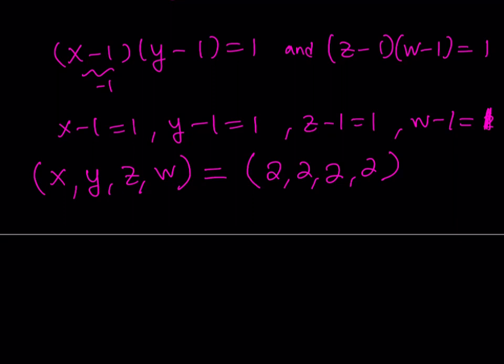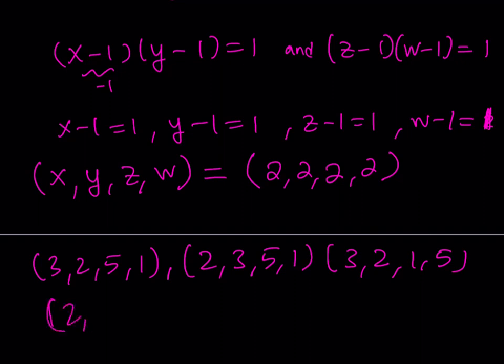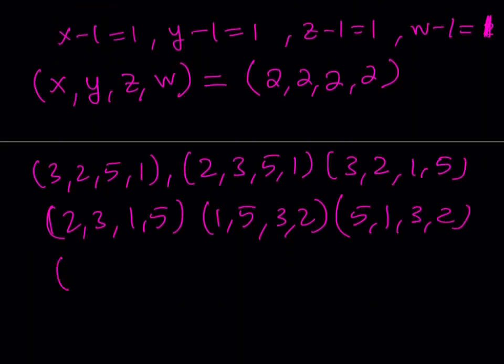And those quadruples are going to look like 3, 2, 5, 1. And then the other one is going to be like 2, 3, 5, 1. So basically, you can kind of rotate this a little bit, and then we'll get 3, 2, 1, 5. We'll get 2, 3, 1, 5. We'll get 1, 5, 3, 2. And then we should be getting 5, 1, 3, 2. And then we have one more, 5, 1, and 2, 3. Of course, you add the 2, 2, 2, 2, and then you're going to get all the solutions.